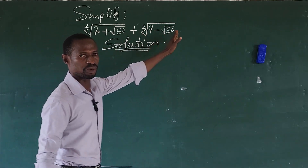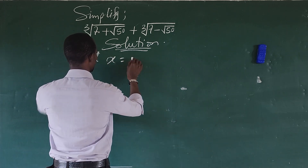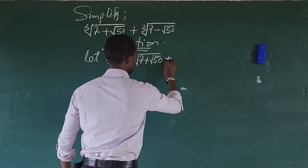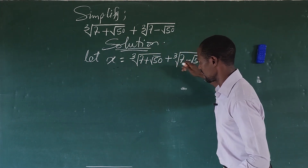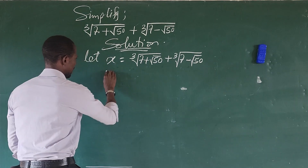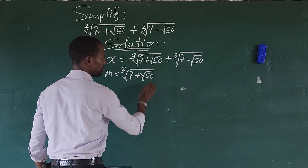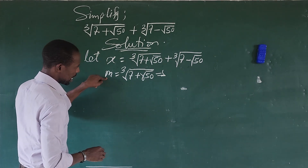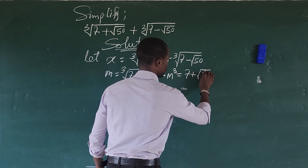This expression — we're going to do a simple substitution. Let x equal the cube root of (7 + √50) plus the cube root of (7 − √50). Now we bring in two variables: let m be the first one, which is the cube root of (7 + √50). To eliminate this cube root, we take the cube of both sides, so m³ = 7 + √50.